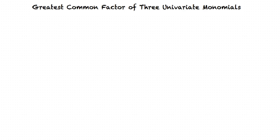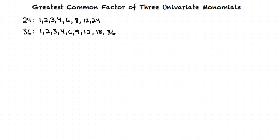For example, if we have two numbers, 24 and 36, we make a list of the factors of each integer as follows. The Greatest Common Factor of these two integers is 12, since 12 is the largest number that divides evenly into both 24 and 36.